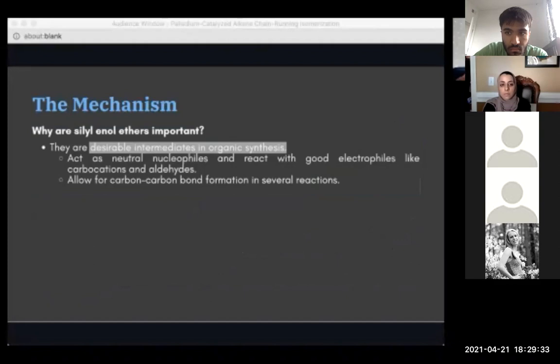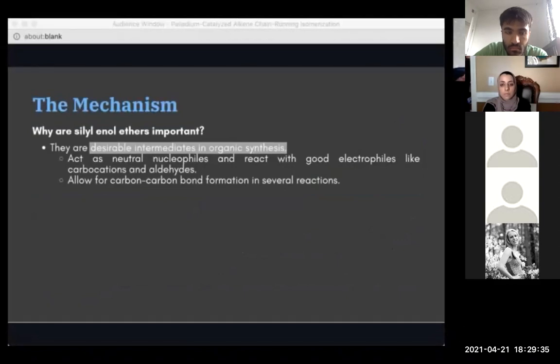Going back to what the reaction scheme tells us, we see a terminal alkene transformed to an internal alkene and a siloenol ether. But why are siloenol ethers so important? Basically, they're desirable intermediates in organic synthesis, and they serve as neutral nucleophiles that react with good electrophiles, like carbocations and aldehydes. Siloenol ethers also allow for carbon-carbon bond formation in several reactions.